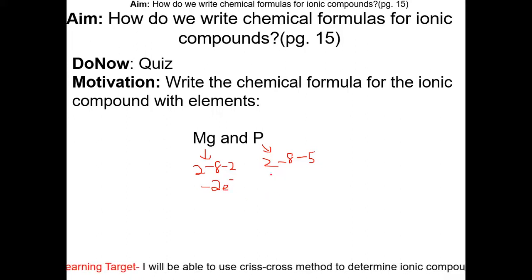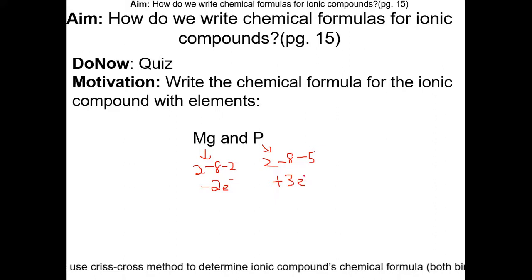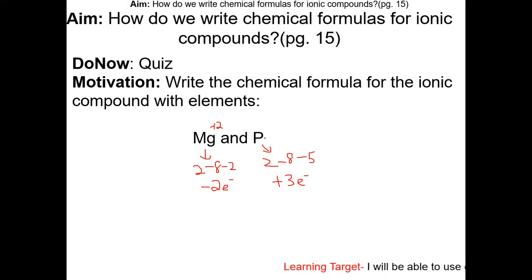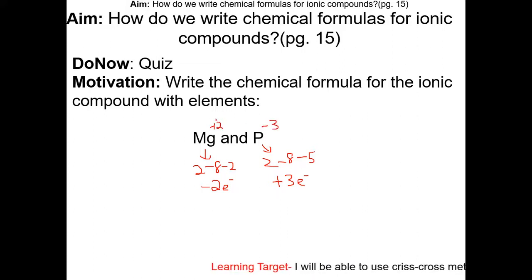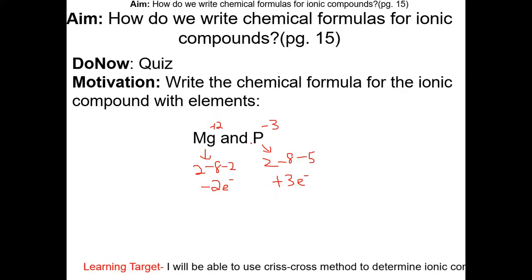Since phosphorus is a non-metal, it is going to gain electrons. Following the octet rule, it is going to gain three electrons for phosphorous to achieve the noble gas configuration. So based off of this, each magnesium will be a positive 2 charge, and each phosphorous will be a minus 3 charge. You can tell that magnesium and phosphorous are not going to be in a 1 to 1 ratio when they form the ionic compound.